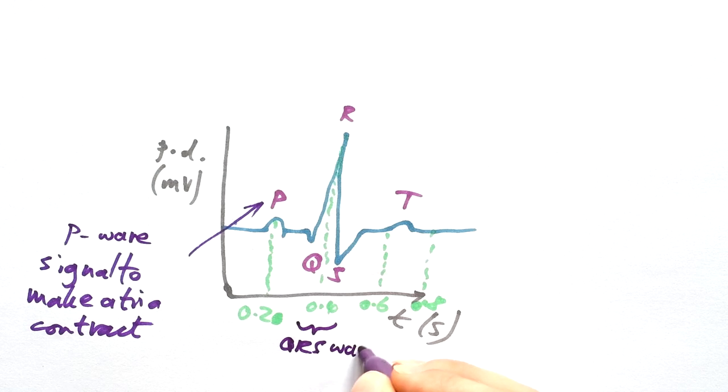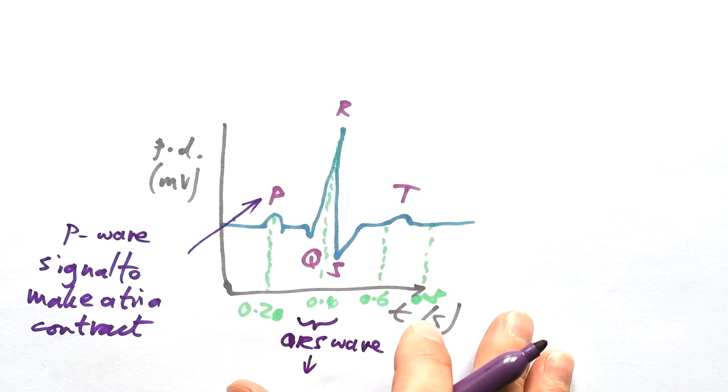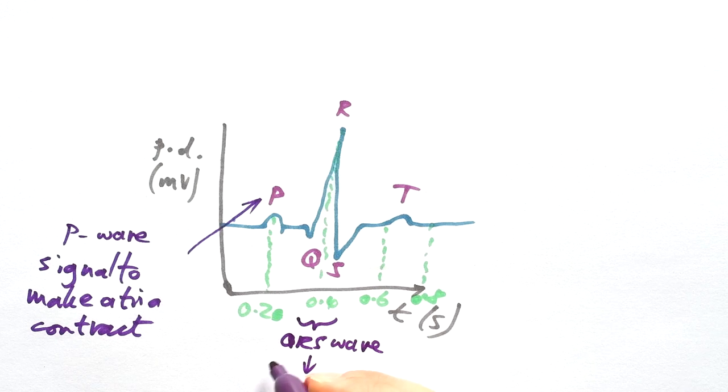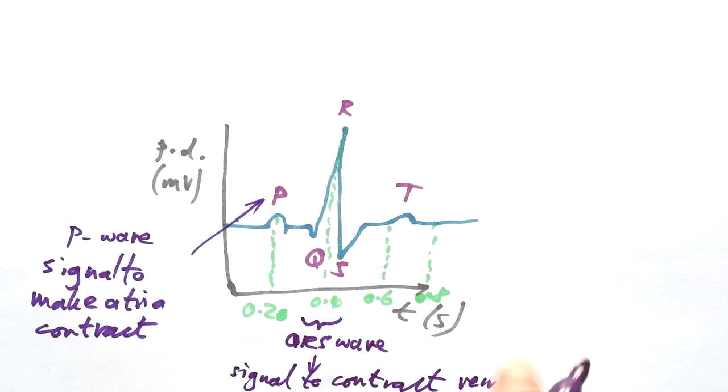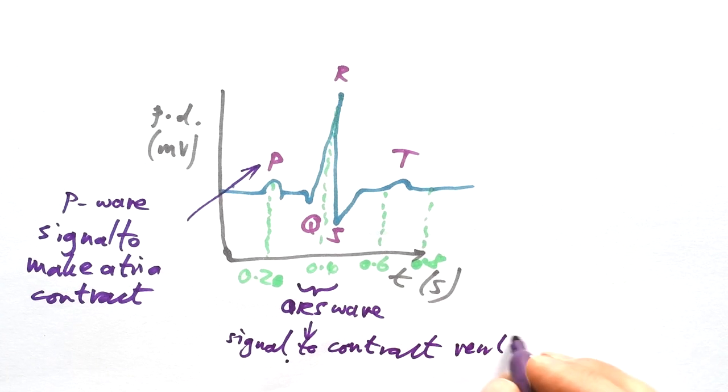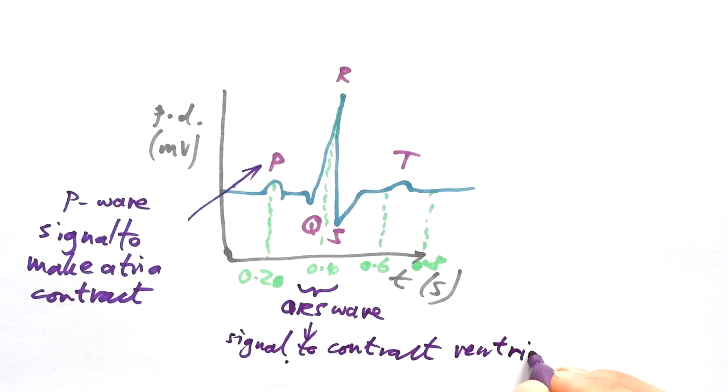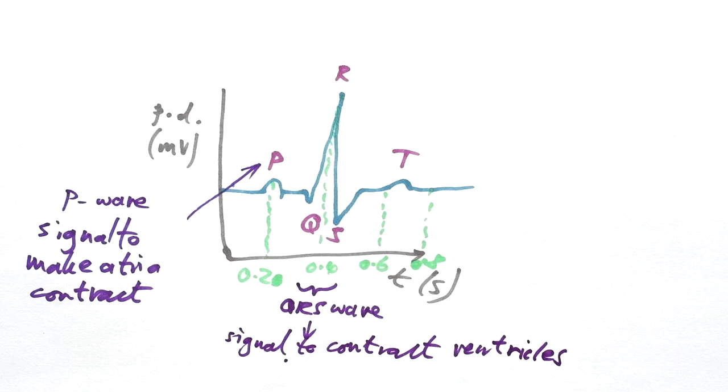The QRS wave, we said that a short delay after, that's the signal that's gone through the atrioventricular node, and that's the signal to make the ventricles contract. And like we said, that needs to be a lot bigger in order to pump blood to the lungs and to the rest of the body as well.